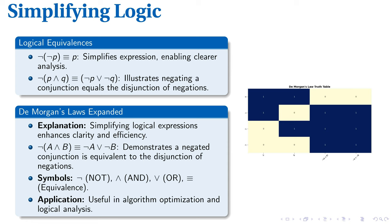Logical equivalences serve as a necessary simplifying tool in propositional logic. Essentially, they provide expressions with equivalent truth values, as seen in the equivalence of NOT of NOT P, and P. Further amplifying this concept, we introduce DeMorgan's laws. These laws express the true equivalence of the negation of a conjunction and the disjunction of negations. Simply put, NOT of A and B is equivalent to NOT A or NOT B. The significance of this transformation is seen in numerous sectors, particularly algorithm optimization and logical analysis.